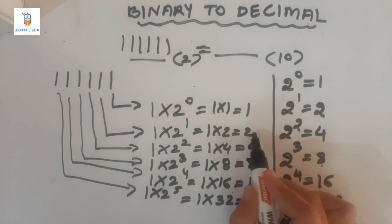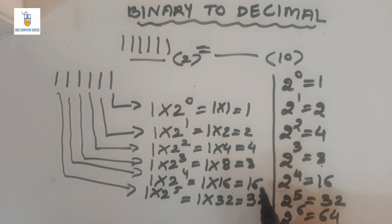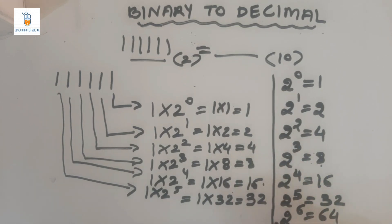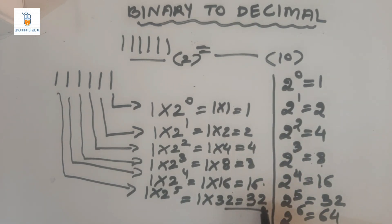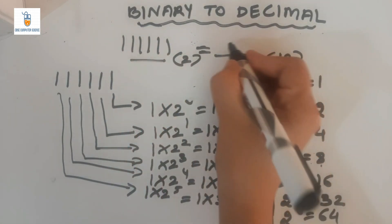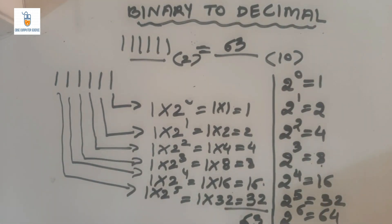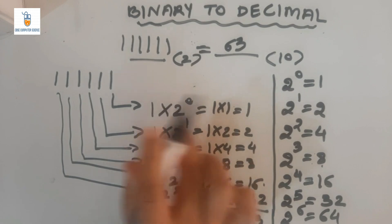Adding step by step: 1 plus 2 is 3; 3 plus 4 is 7; 7 plus 8 is 15; 15 plus 16 is 31; 31 plus 32 is 63. So the answer obtained is 63. Therefore, 111111 to the base 2 is equal to 63 to the base 10. This is how we convert a binary number into its equivalent decimal form.